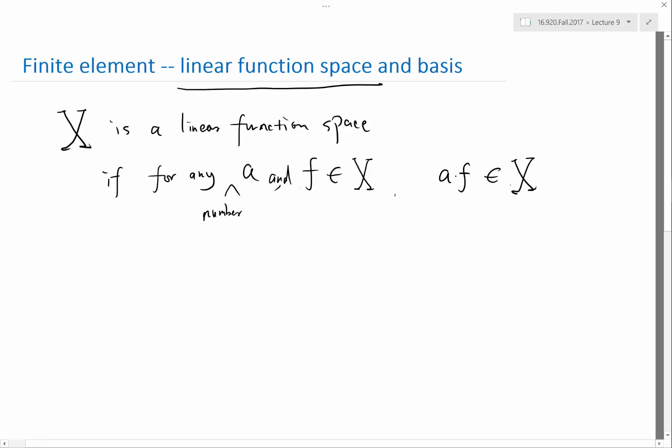So this is part of linearity. If I scale the function by a factor of two, the function is no longer in that space, that means it's not a linear space. So this is the first criterion. The second criterion is for any f and g, both within the linear space, f plus g has to be also in that linear space. So these are basically the two criteria for linearity.